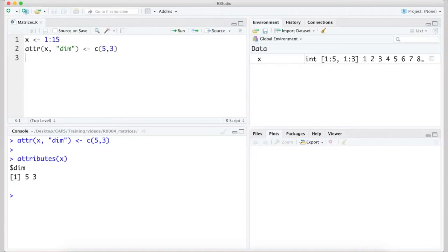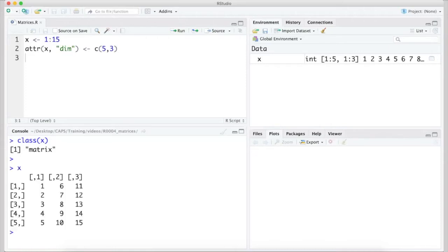Remember, all we've done is add the dim attribute, or again, you might think of this as a form of metadata, to the vector named X. If we check the class of this object, we see that R now views it as a matrix. We also get a different result when we view it. While it used to be a simple one-dimensional vector, the 15 values are now arranged into a matrix of five rows and three columns.